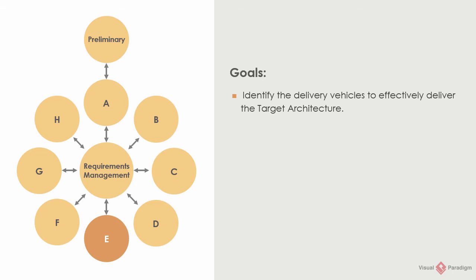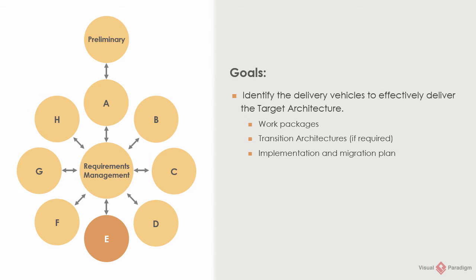Here are three key concepts for transitioning from developing to delivering a target architecture. Work packages, which are the logical group of changes. Transition architectures, which are the intermediate architectures in between the baseline and target, outlining the status of the enterprise architecture at specific times. And the implementation and migration plan, which is the schedule of projects that will realize the target architecture. The majority of Phase E is to identify and detail the work packages and transition architectures, and to develop the implementation and migration plan.